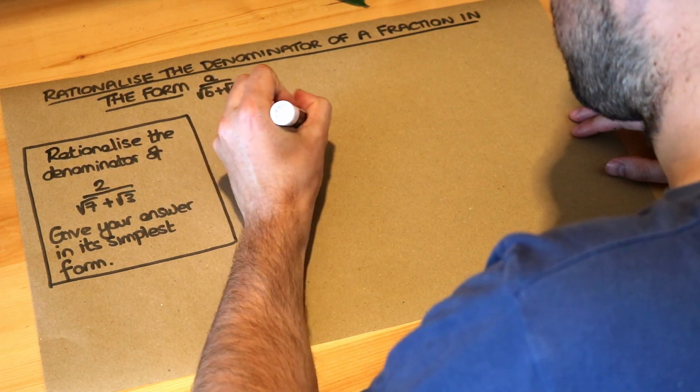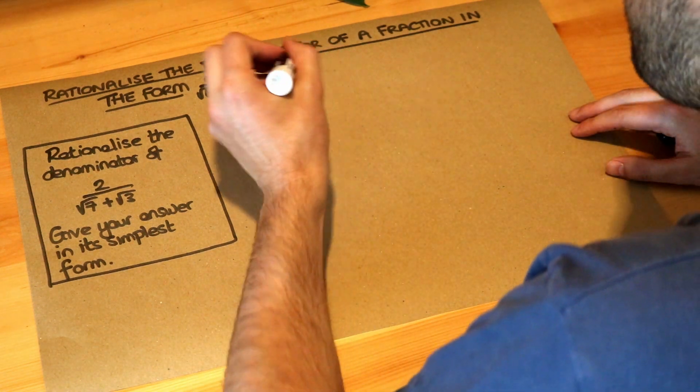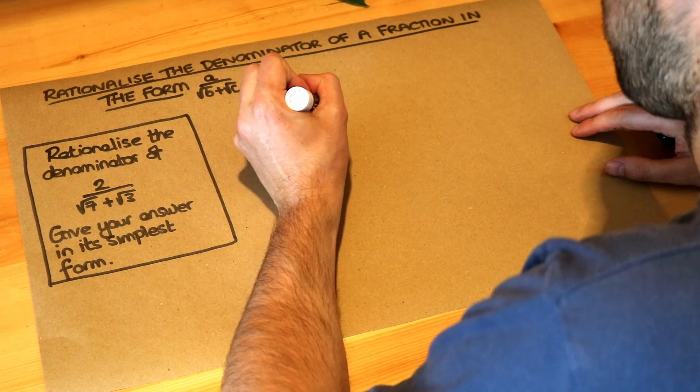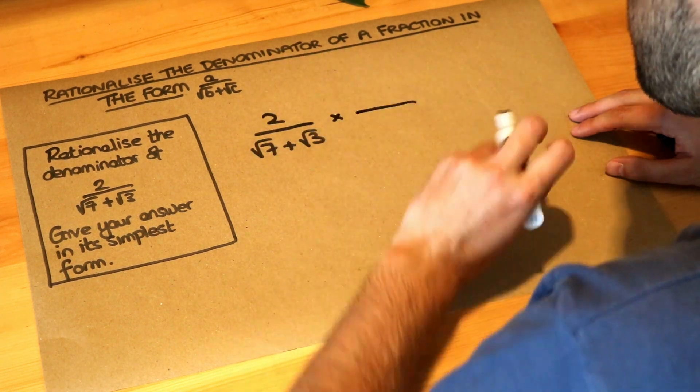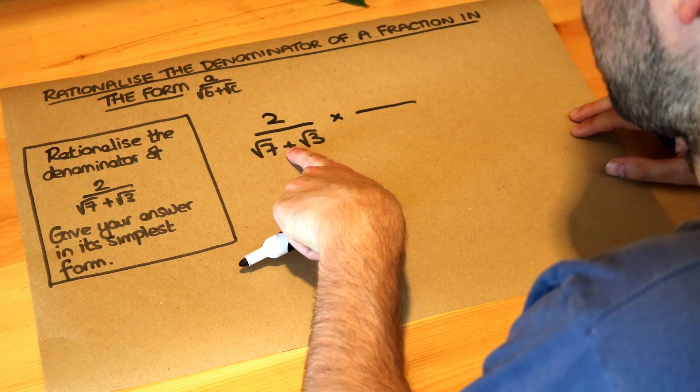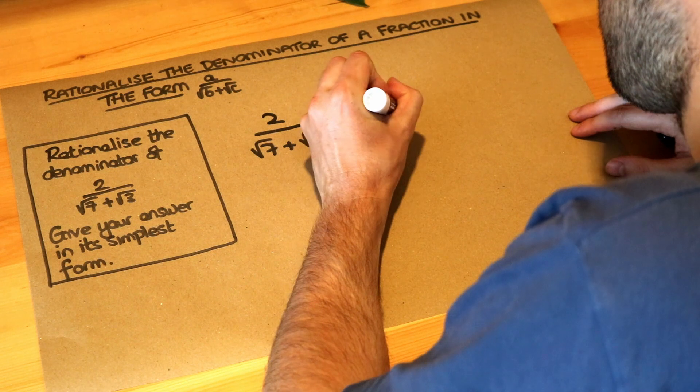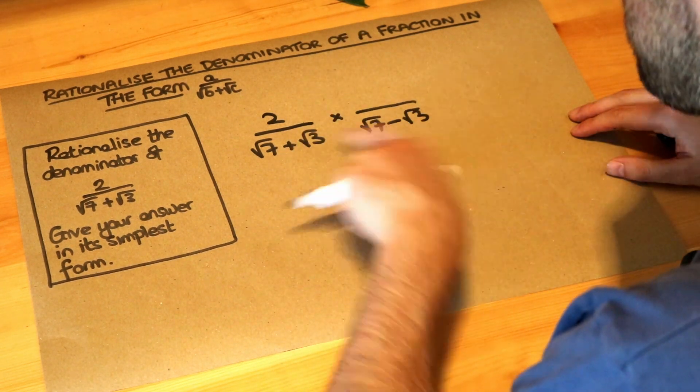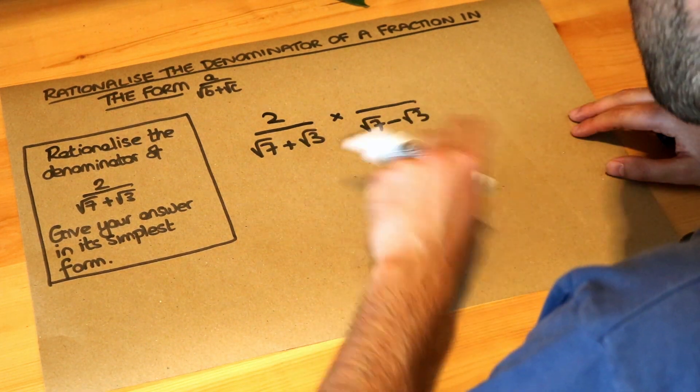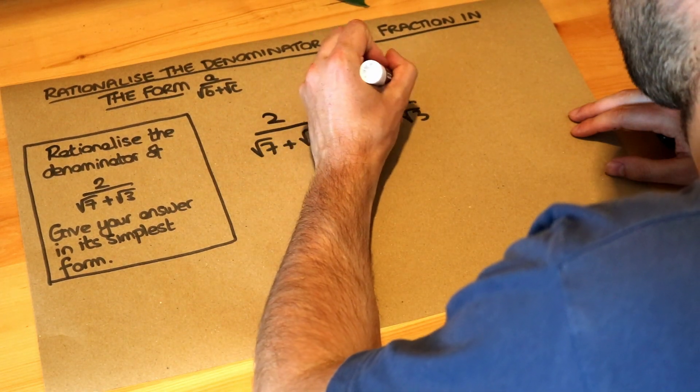If you have a sum or difference of two things in the denominator, then you multiply the top and the bottom of the fraction by the same as what you have here, but you negate the sign in the middle. So plus becomes minus, minus becomes plus, so we're going to have root 7 minus root 3 because the plus becomes minus. If that was minus, it becomes plus. And whatever we times the denominator by, we also have to times the numerator by the same thing.